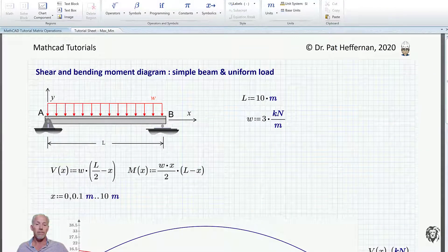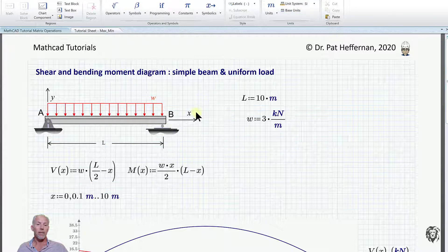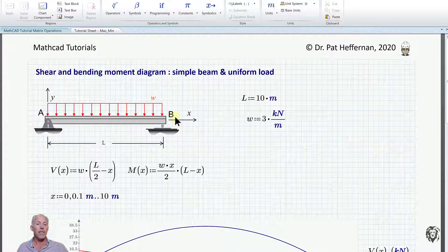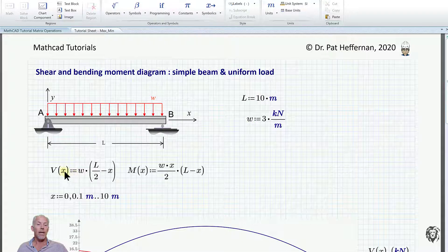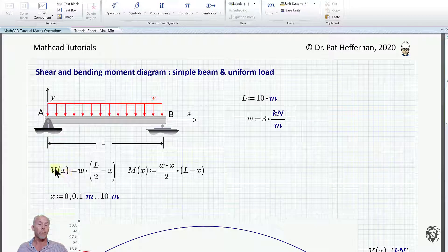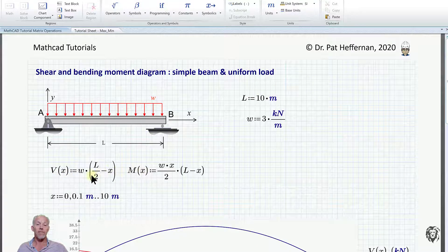So I've set up a MathCAD sheet using pretty much the same problem that he did. I've got a simply supported beam with the UDL magnitude W on it. We set up its fundamental parameters of length and load, and then set up our matching equations for the shear force and the bending moment as functions of X.